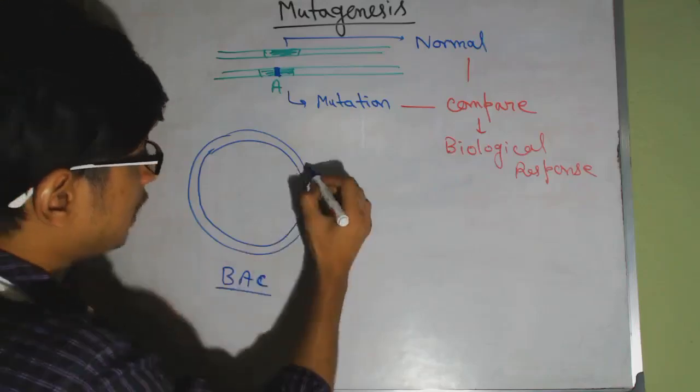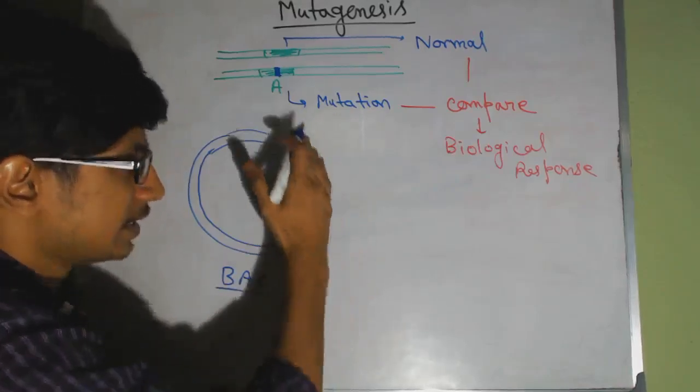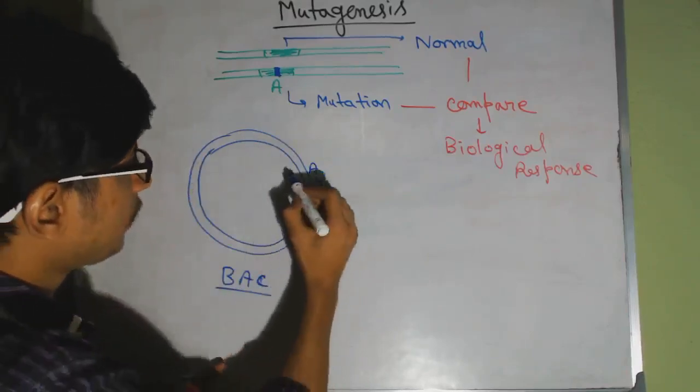That primer is based on the sequence that is present in this vector. So we take a small sequence in this vector. Let's say A, G, G, T, C, C, G. Let's say this is the sequence that we have, and we want to design a primer.